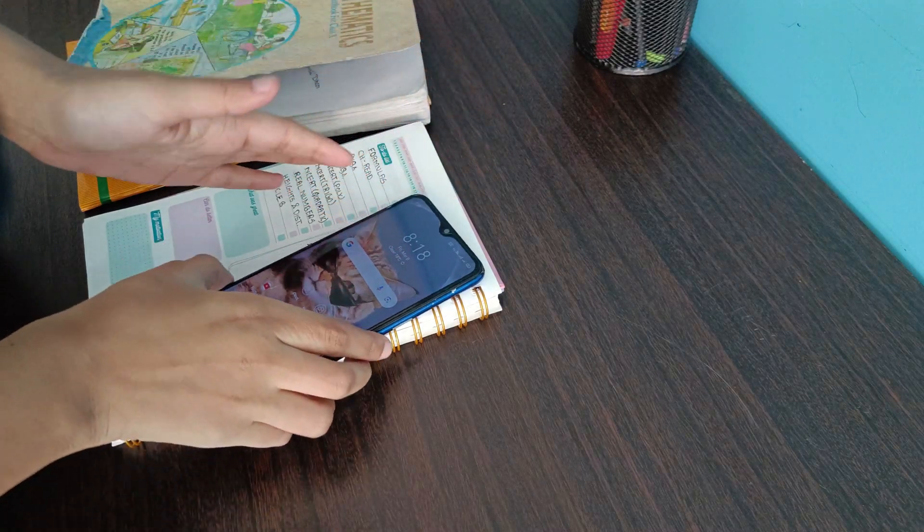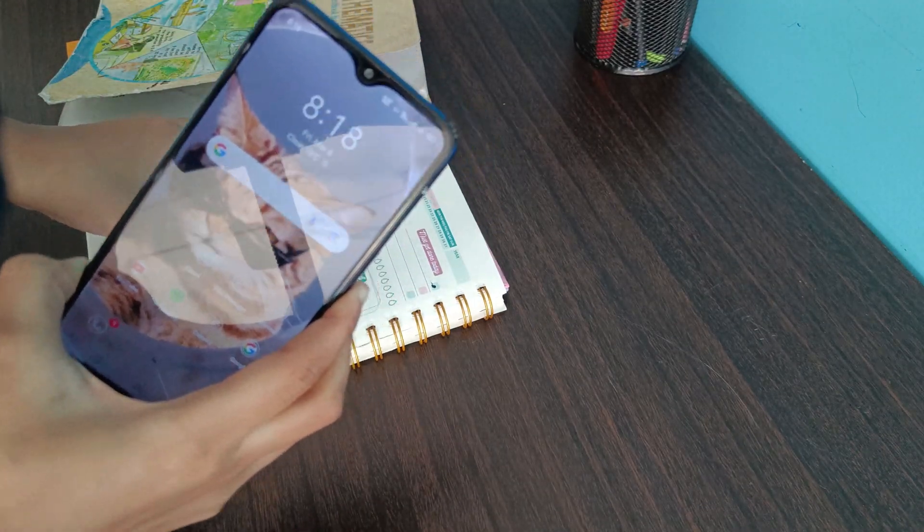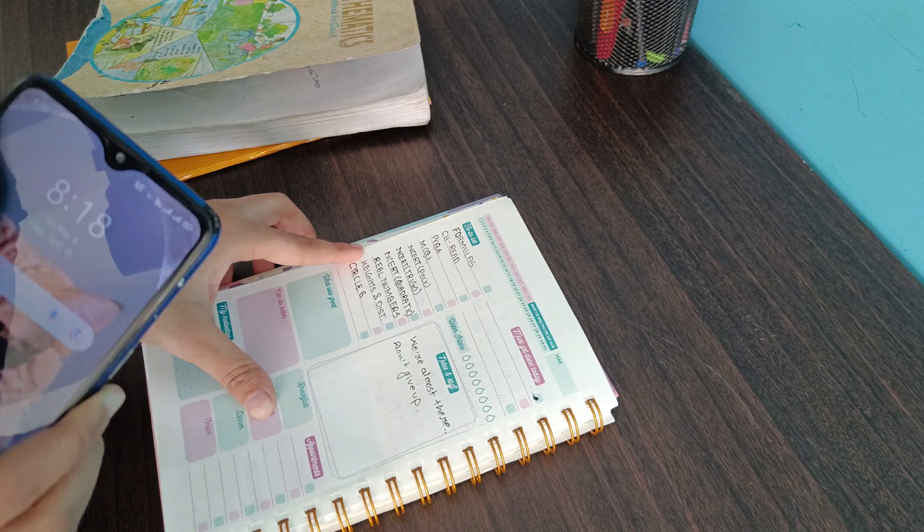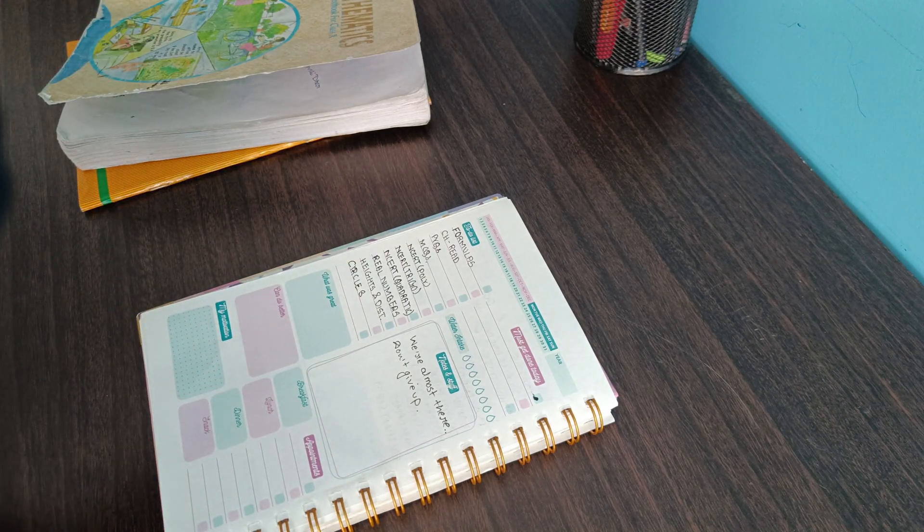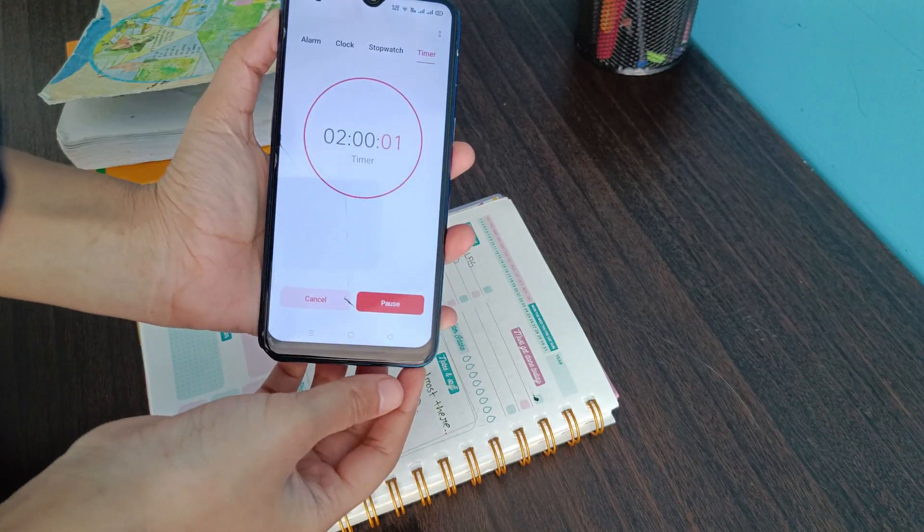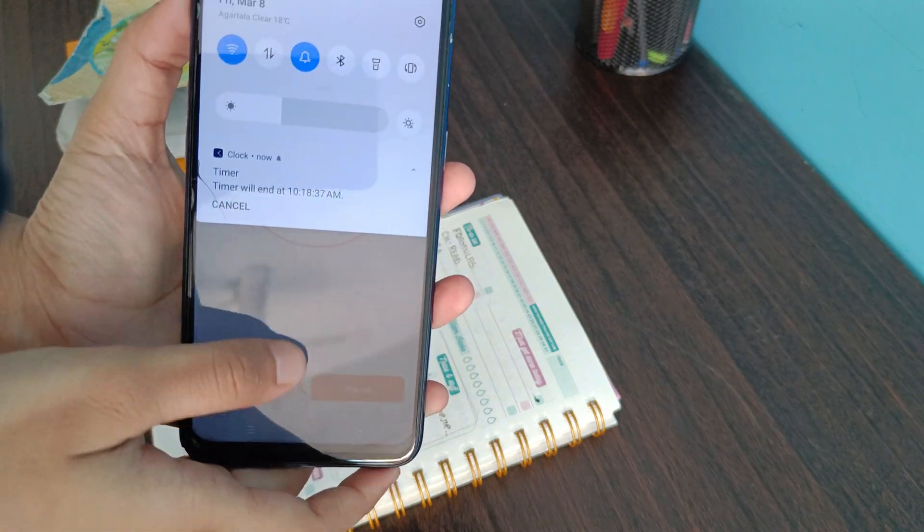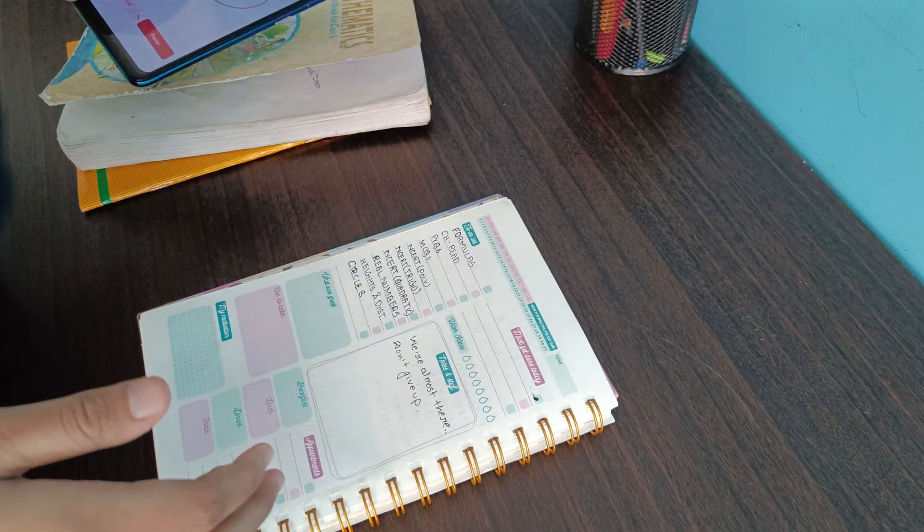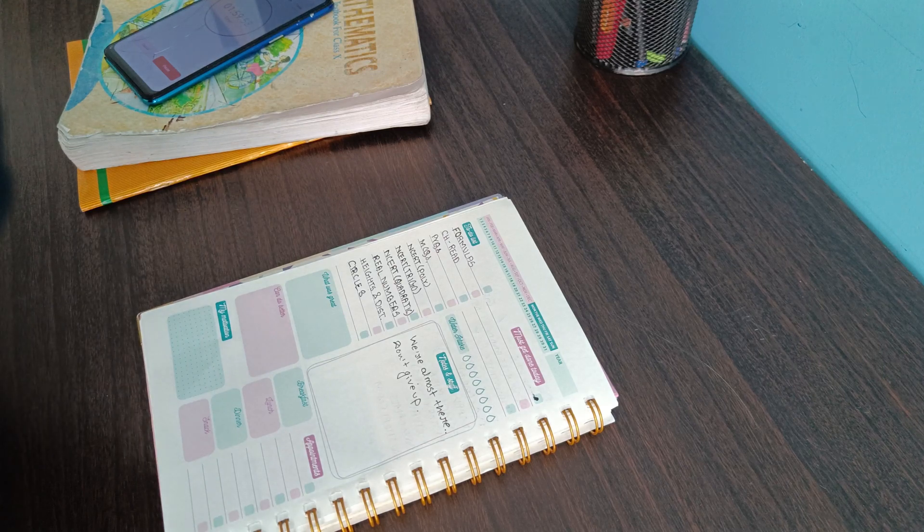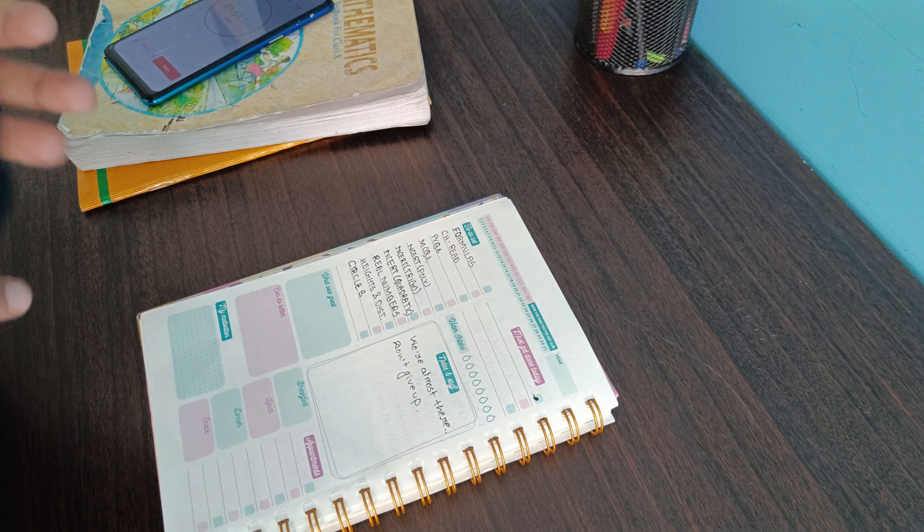Hi everyone, so today is Friday, 8th March, and this is my to-do list for today. Right now I placed a timer of two hours, so this timer will end at 10:18 AM. Right now I'll start off with the revision of mathematics. First of all, I'll revise the formulas and then I will do the chapter read, and then we'll start off with the NCERT exercises.